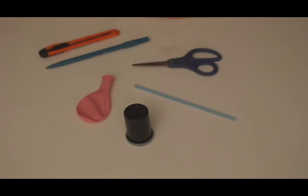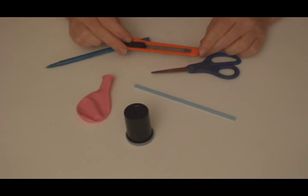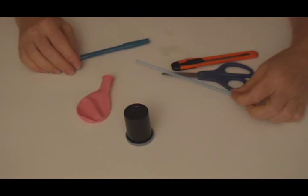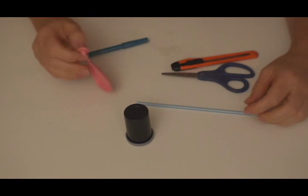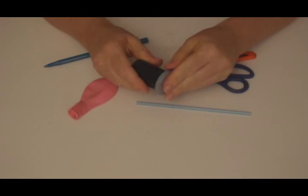To make an air horn you're going to need a few different things: a pair of scissors and also a razor, a regular straw, a balloon, and a film canister that has a lid.